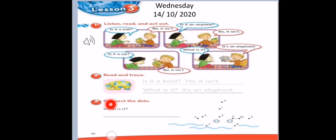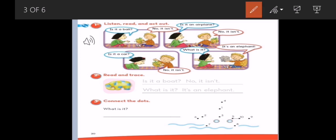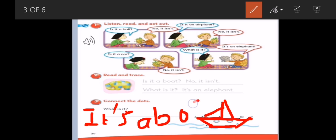Here, number 3. Connect the dots. Let's see. To guess what the shape. Start on 1, 2, 3, 4, 5, 6, 7, 8, 9, 10. Yes. What is it? Excellent. It's a boat. Here, we should write. It's a boat. B-O-A-T. Boat. Boat. Okay.